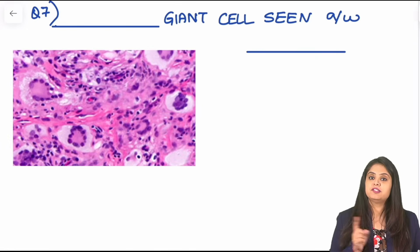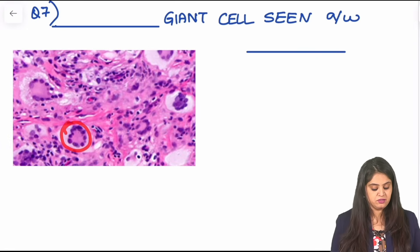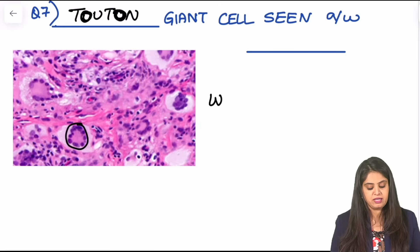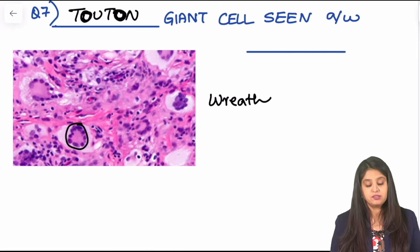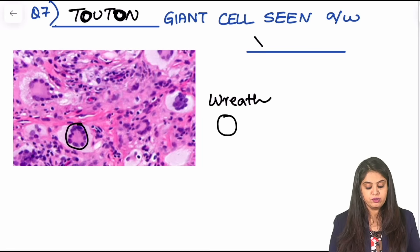Question seven — another giant cell. You can see the wreath-like arrangement of nuclei. This is the Touton giant cell. Everything seems round because the nuclei are arranged in a wreath-like, circular arrangement — similar to a Christmas wreath. This pattern is going to be seen in fat disorders such as xanthoma.